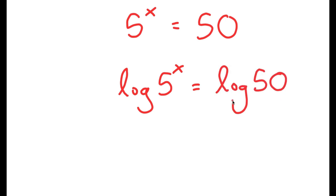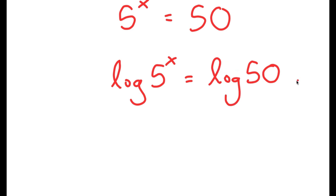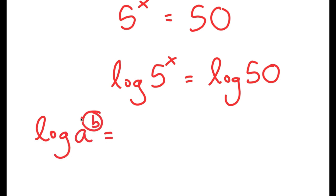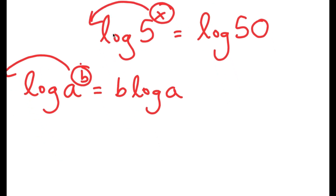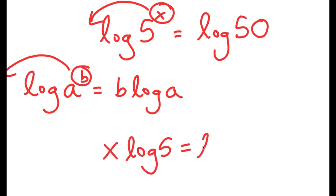The reason I'm doing this is because logarithms come with a special property that states that if I have something in the form log a to the power of b, I can actually move the exponent b to the front, so this turns into b times log a. So in this case, I have log 5 to the power of x, and I can move x to the front. So now I get x times log 5 is equal to log 50.